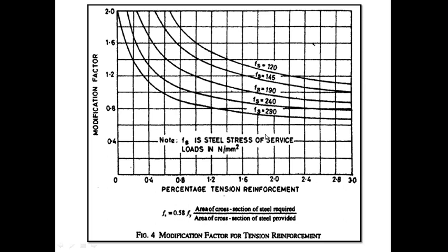If we see page 38 of IS 456-2000, there is Figure Number 4, that is, modification factor for tension reinforcement. On the X-axis, it is the percentage tension reinforcement in beam or slab, and on the Y-axis there is a modification factor.